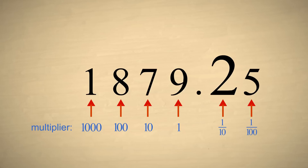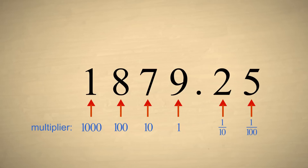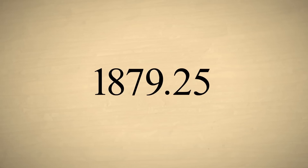The first digit to the right of the decimal point is multiplied by one-tenth. The next digit is multiplied by one-hundredth, and so on. Just as with integers, the value of the decimal number is the sum of all its digits times their multipliers. For example,